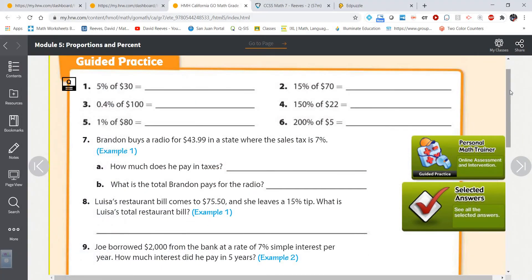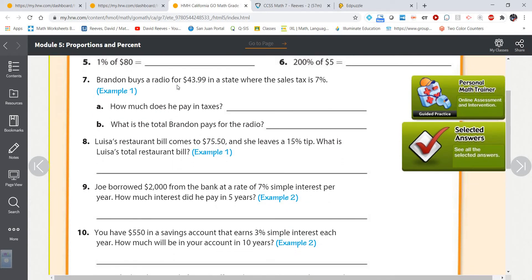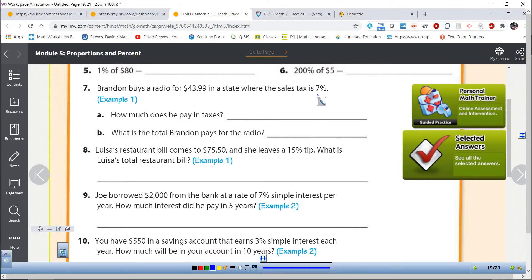Let me hide this calculator so I can take a look at this next problem. Brandon buys a radio for $43.99 in a state where the sales tax is 7%. How much does he pay in taxes? What is the total that he pays for the radio? Step one, we're going to change that 7% to a decimal. That's right, 0.07.